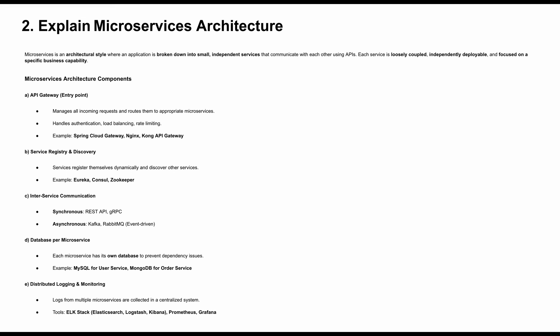For inter-service communication between microservices, we have synchronous and asynchronous options. For synchronous, we can use REST API, RestTemplate, WebClient, or gRPC. For asynchronous, we can use RabbitMQ, Kafka, or event-driven architectures. For databases, each microservice has its own database to prevent dependency issues — this is the database-per-microservice pattern.